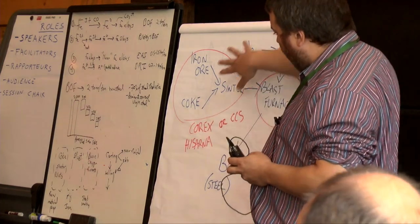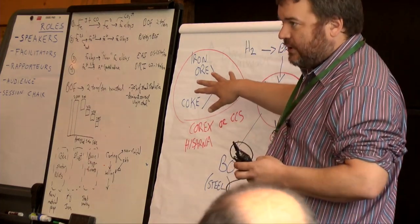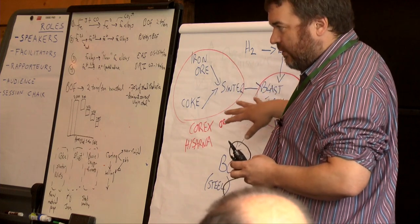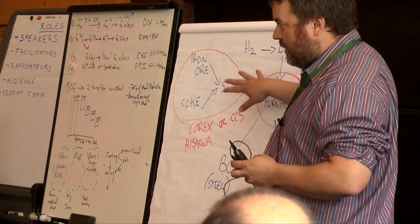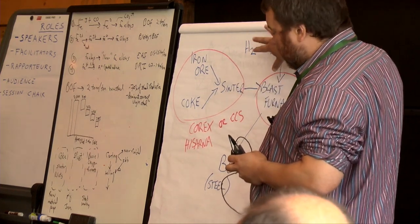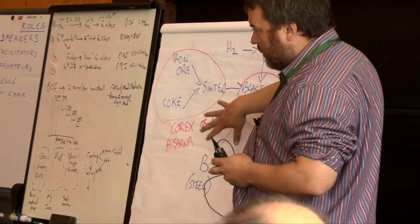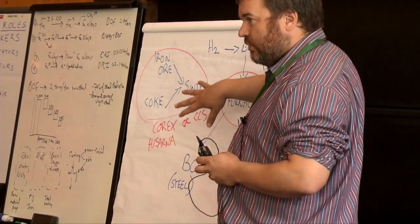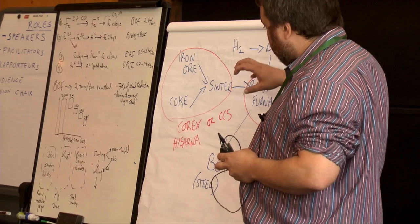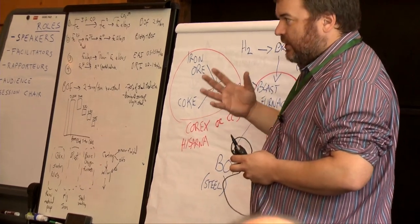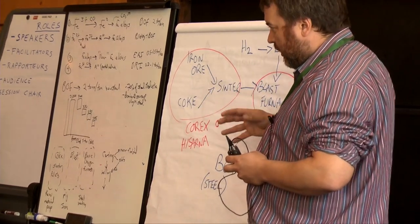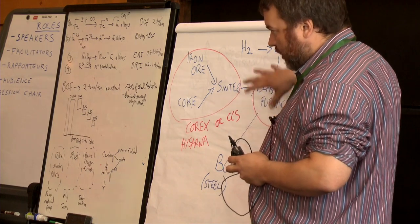If you then integrate the whole system with CCS, you're going to get rid of about 70% to 80% of the emissions. But because you've got so many sources within the process, it's extremely difficult to get rid of all of the emissions from steelmaking. There's lots of things that are going on, and each of these bits actually produces CO2.